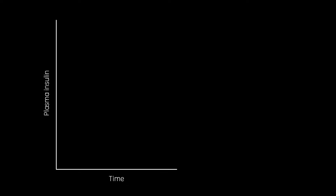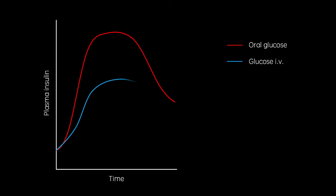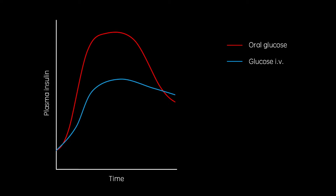Incretin hormones were discovered due to the differential effect of oral and intravenous glucose on insulin secretion. Oral glucose evokes a much larger spike in plasma insulin than intravenous glucose, a phenomenon known as the incretin effect. This is due to the effects of incretin hormones, GIP and GLP-1, small peptides which are released from the gastrointestinal tract in response to nutrient absorption.